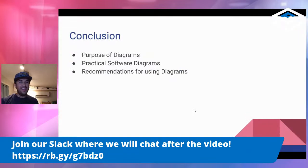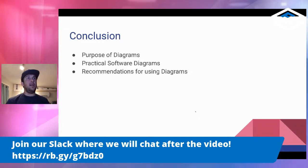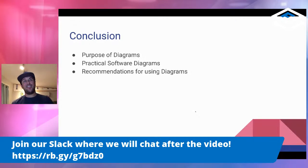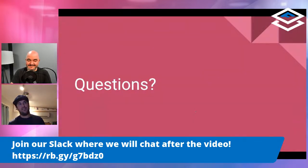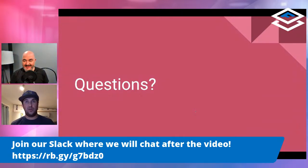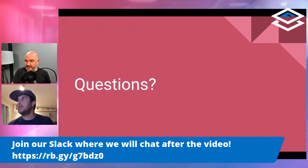Conclusion. We talked about the purpose of diagrams — why you do it. I gave you an example of six or seven diagrams specifically, in a methodology you can use to document an entire system or major line of feature work. And I gave you some recommendations for using diagrams. Hopefully you got something out of this and you're ready to jump in and start diagramming yourselves. That's it for me. Do you have questions? Dude, that was so cool, my mind is like swimming right now. If you're watching the stream and have questions, put them in the YouTube comments and I'll pass them on to Richard.